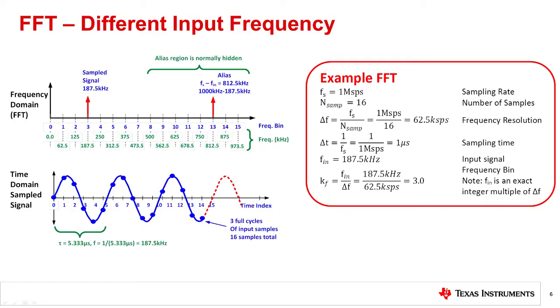For this example, we increase the input frequency to 187.5 kilohertz. Again, this frequency happens to be an exact integer multiple of the frequency resolution, so it creates a frequency component in bin 3. However, what happens if the input frequency is not an exact multiple of the frequency resolution?